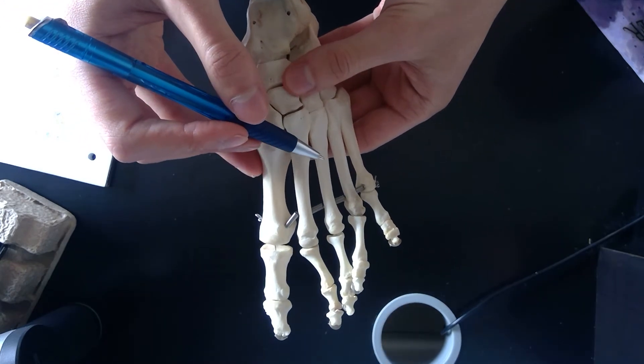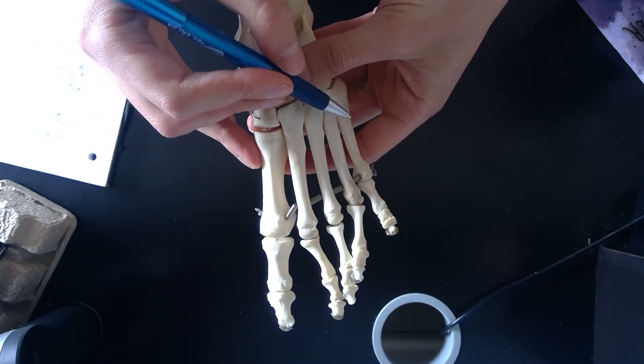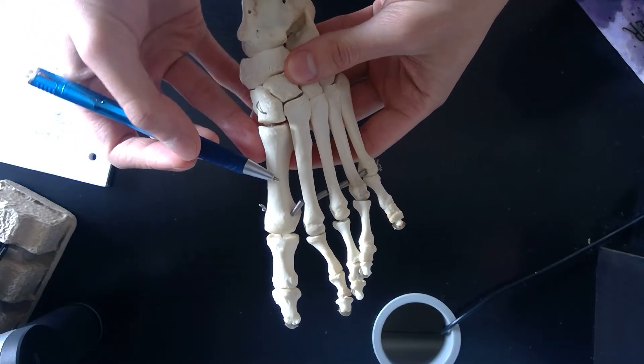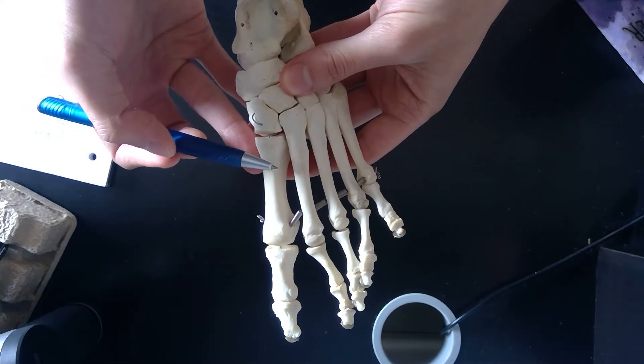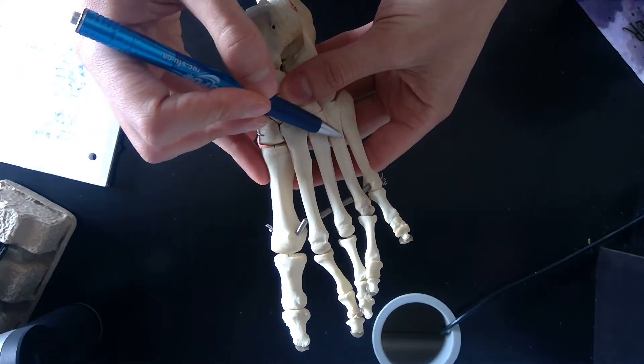Moving distally again, we now have our metatarsals and they're numbered from the big toe being number one and your pinky toe being number five. So it'd be one, two, three, four, and five.